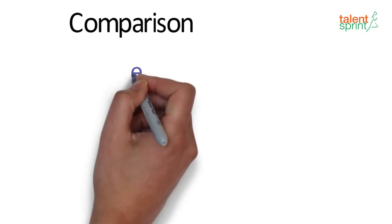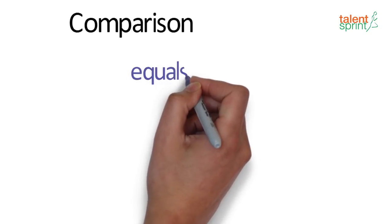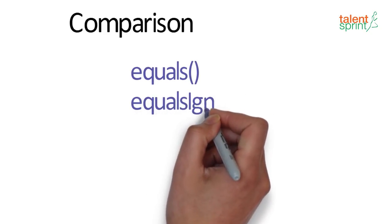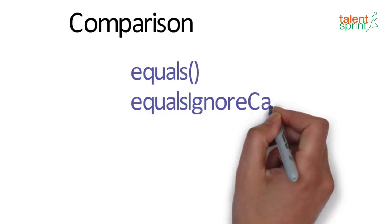Starting with comparison, the four most frequently used string comparison methods are: equals, equalsIgnoreCase, which ignores the case of strings during comparison, compareTo, and compareToIgnoreCase.